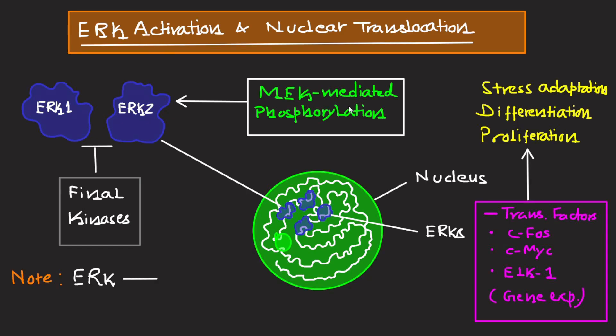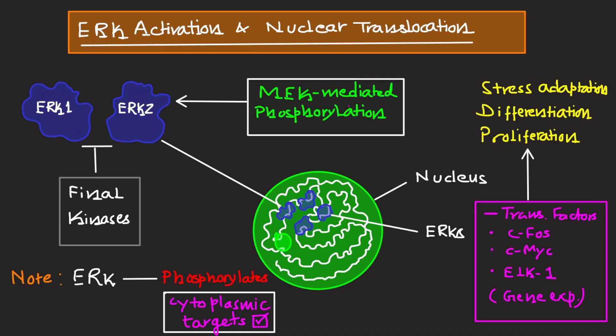It is important to note that ERK can also exert its effects in the cytoplasm by phosphorylating cytoplasmic targets. ERK can translocate to the nucleus to activate transcription factors, but it can also activate proteins present in the cytoplasm, further influencing various signaling pathways — many of whose connections are still not fully understood, particularly under cellular stress conditions.